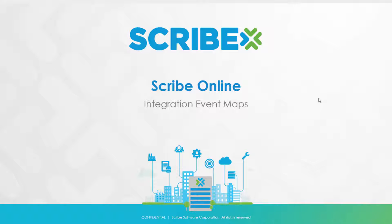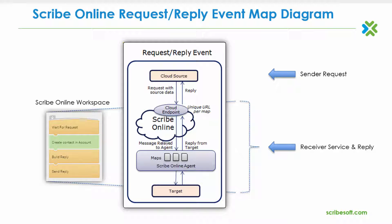Let's begin with the request-reply event map. A ScribeOnline request-reply event map, which is created by means of an integration event solution, is an open-ended interface that is used as the vehicle to integrate data with custom applications, provided those applications can be configured to support the calling of a REST API.